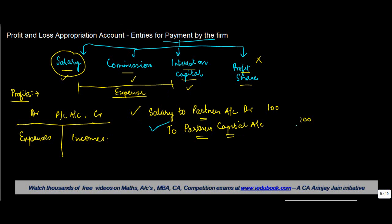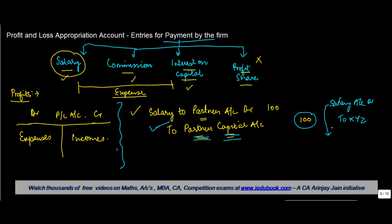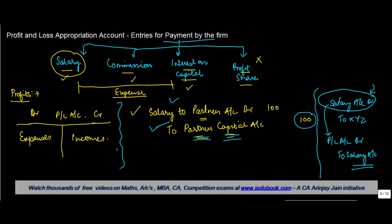This is credited because it is becoming due to a partner — it is payable to a partner — hence you show this as a liability. An increase in a liability. In a normal case, for other expenses not related to the partner, once we had passed this entry — say Salary Account debit to XYZ — we would transfer the balance of salary to the profit and loss account by debiting the P&L account and crediting the salary account.